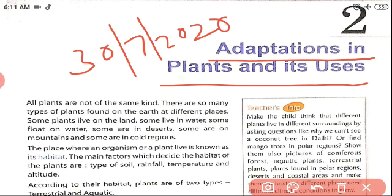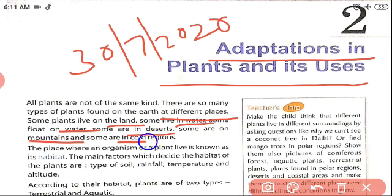All plants are not of the same kind. There are so many types of plants found on earth at different places. Some plants live on land, some live in water, some float on water, some are in the desert, some are on mountains, and some are in cold regions.